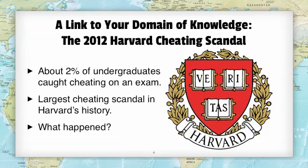There were four take-home exams in the class, and about half of the students in the class were investigated. About half of those were caught basically cheating — collaborating on the final exam and working together on the answers, which is clearly a violation of Harvard's Honor Code and the basic standards of academics. You just don't collaborate; it's your own work. This is by far the largest cheating scandal in Harvard's history.